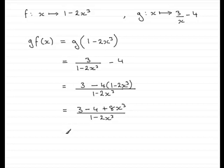And then if I put the 8x cubed first, then we've got 3 take away 4, which is minus 1. And that's all divided by 1 minus 2x cubed. And that's what we had to show.